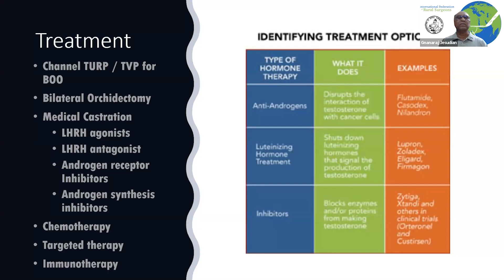Treatment is, of course, for the obstruction. The channel TURP differs from the classical TURP in that you don't fully resect the prostate — it is just to create a channel for the patient to pass urine. Bilateral orchidectomy is the gold standard for androgen deprivation. There are also many medical ways of achieving castration, starting with LHRH — luteinizing hormone releasing hormone — agonists, antagonists, androgen receptor blockers, androgen synthesis inhibitors, and so on.